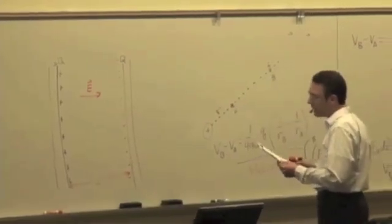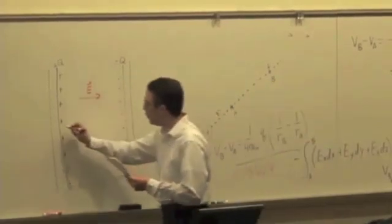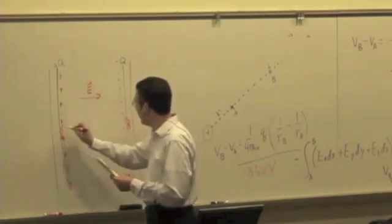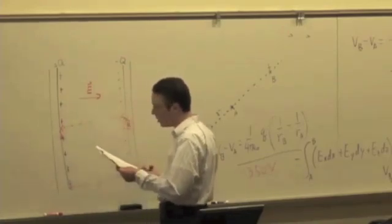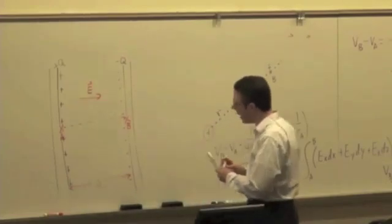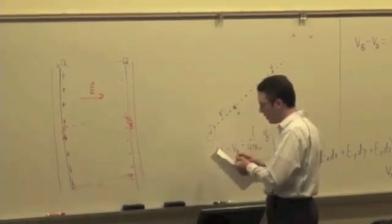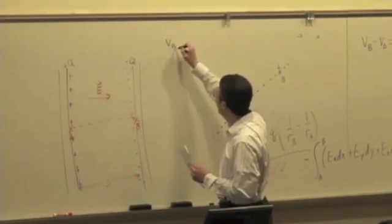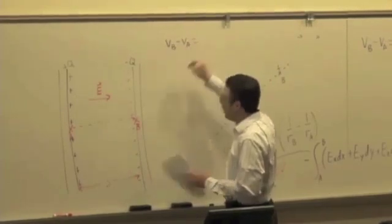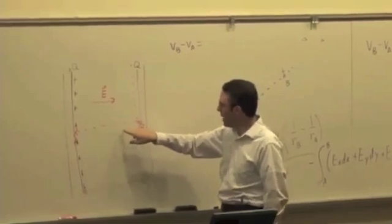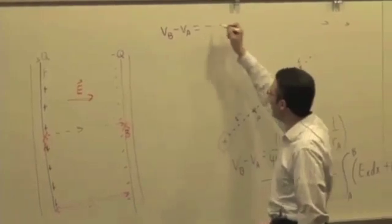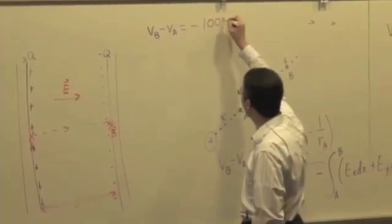Let's call this point A on one plate, point B on the other plate, across that distance S. Let's say VB minus VA is, well, VB minus VA, so we're going along a path that's in the direction of the electric field. It should be negative, and let's say it turns out to be negative 1,000 volts.